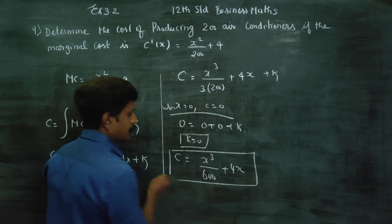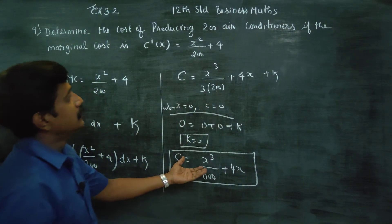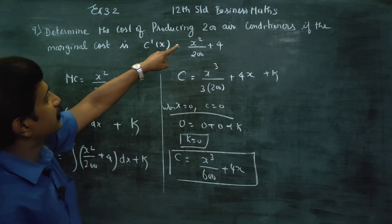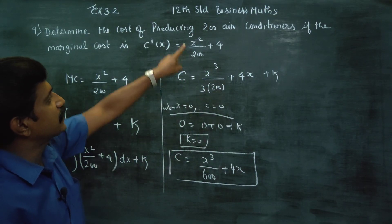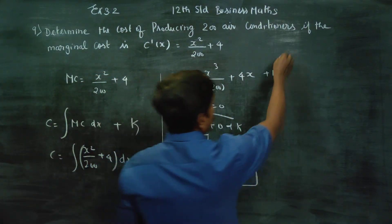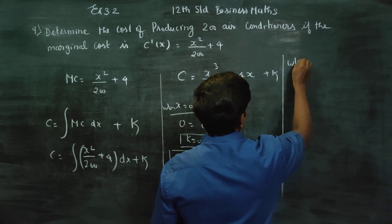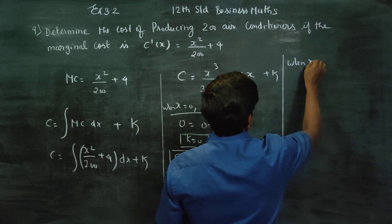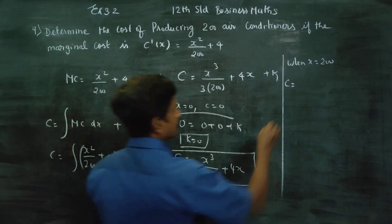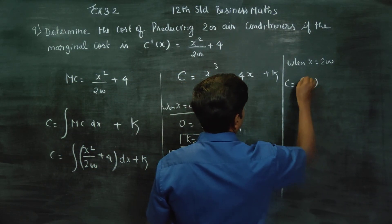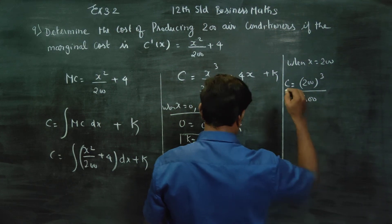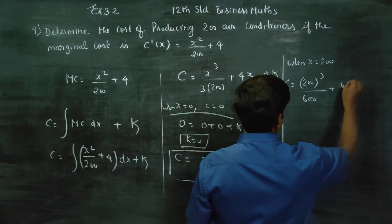Now, how much does it cost to produce 200 air conditioners? We will substitute x equals 200 into the cost function. When x is equal to 200, c is equal to 200 whole power 3 by 600 plus 4 times 200.